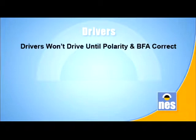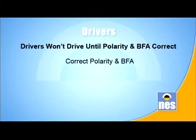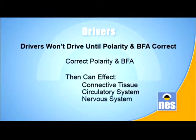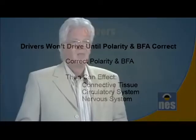The organ drivers won't drive until the polarity and the big field aligner are reasonably correct. We made an infrastructural to correct the three axes of the body - the big field aligner - and we find that polarity and BFA need to be used before we start to work on the drivers themselves. Once we get those three axes correct, we can then affect the connective tissues - the meridian system - the circulatory system, the blood, the fluids, as well as the nervous system, which is the QED field of the body.